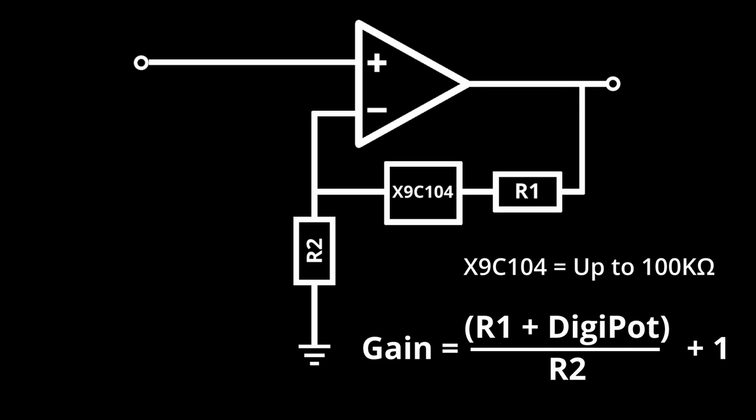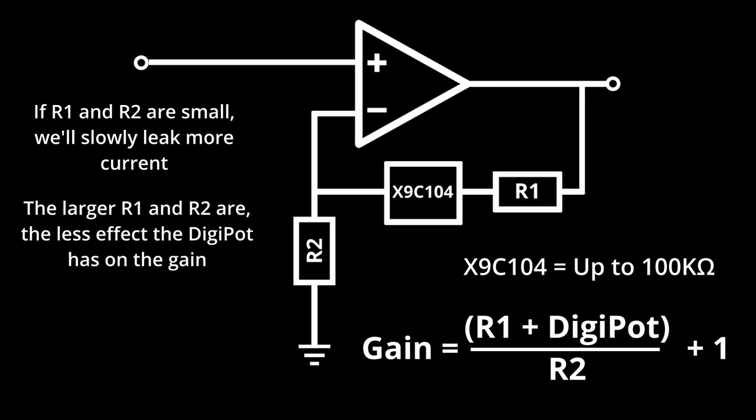Choosing good values for R2 and R1 is tricky, because this digipot only goes up to 100k, which limits the range of resistance values we can use for R2 and R1. We don't want to use too small of resistors in order to limit the current drain, but if we choose too large of resistors, then the 100k ohm digipot will have little effect on the actual gain.